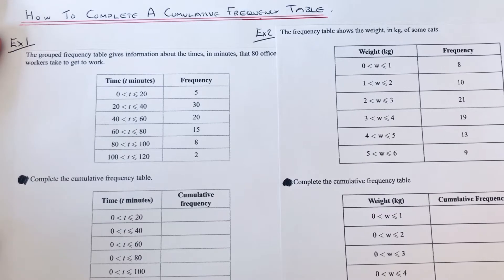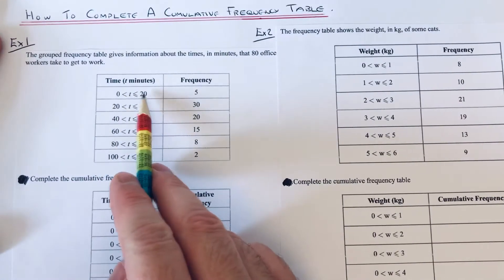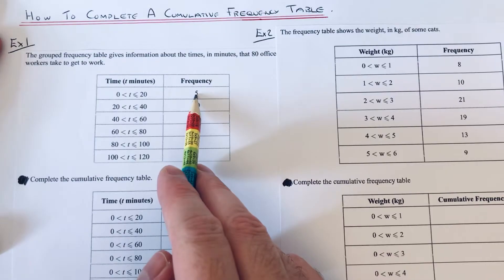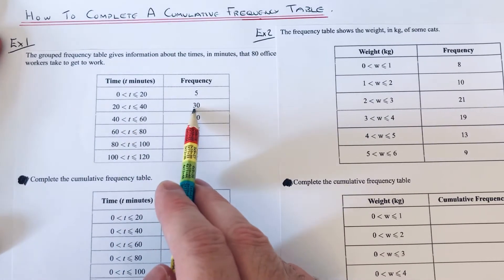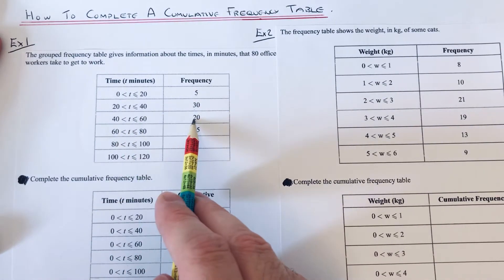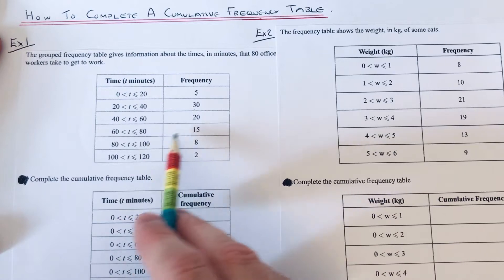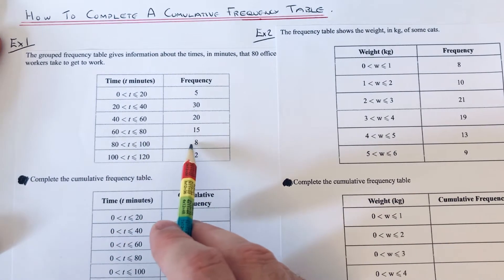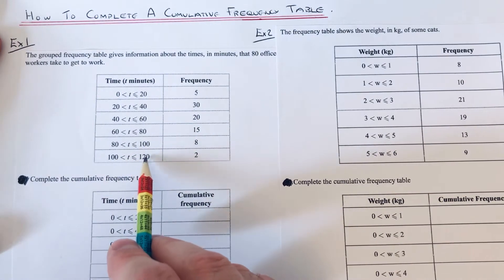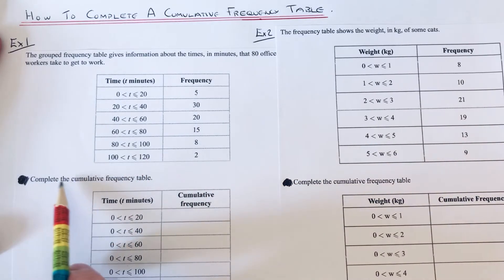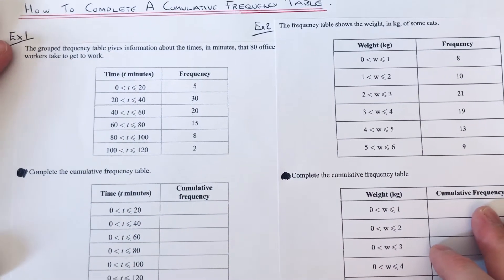So let's have a look at example one. The grouped frequency table gives information about the times in minutes that 80 office workers take to get to work. So we've got our groups down here: 0 to 20 is 5, 20 to 40 is 30, 40 to 60 is 20, 60 to 80 is 15, 80 to 100 is 8, and 100 to 120 is 2.